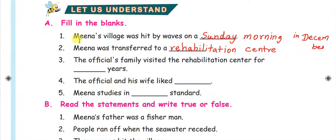Meena is a proper noun, so M is written as a capital letter. Here also M is capital letter.